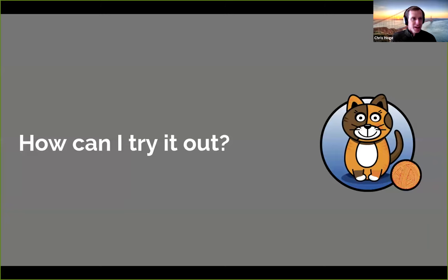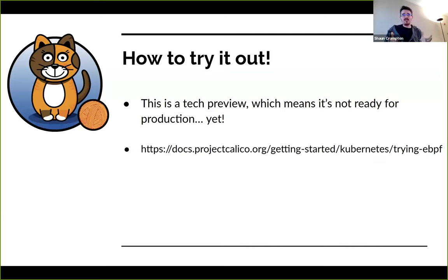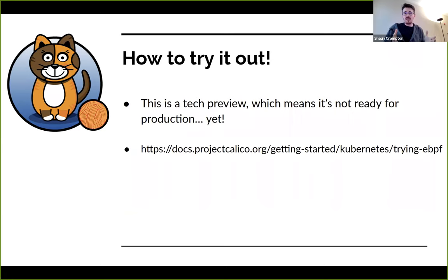So how can you try it out? A key thing to stress is this is a technology preview at this stage — it takes a while to really harden the data plane and put it through its paces. We don't want people using this in production. But if you do want to try it out, we've got a link to the documentation and there's a how-to guide that will tell you what sort of system to set it up on. There is a requirement for a new kernel, and we did our testing on particular platforms, so we're steering people to the same platforms we used. Hopefully you'll have the best experience if you try this out.